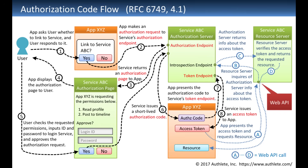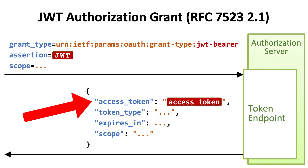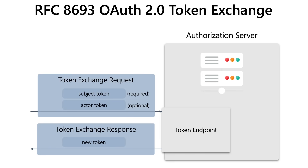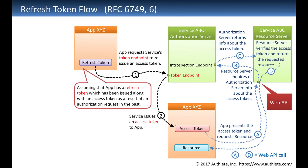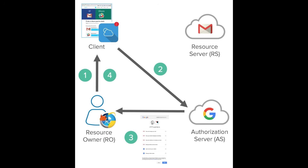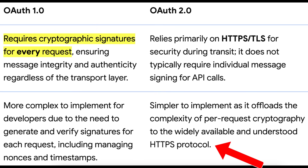OAuth 2.0 reimagined this framework entirely. It removed the requirement for cryptographic signatures and shifted security responsibilities to the underlying HTTPS transport layer. Instead of signing every request, OAuth 2.0 uses bearer tokens — simple access tokens that grant permission as long as the connection remains secure — making it vastly easier to implement across browsers, APIs, and mobile apps. OAuth 2.0 also became extensible and token-driven, adding scopes to limit access, refresh tokens to renew sessions, and token expiration policies to reduce exposure risk. Unlike OAuth 1.0, which tightly enforced cryptographic structure, OAuth 2.0 gave implementers freedom — which could lead to misconfigurations or insecure defaults if not handled correctly. It relies on HTTPS, scoped tokens, and proper expiration to maintain security across distributed systems.